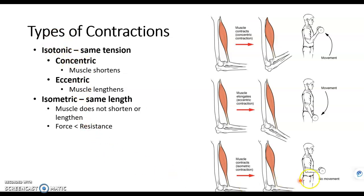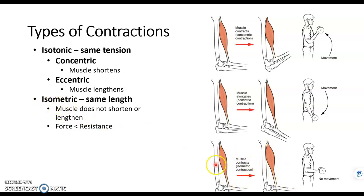But what if there's no movement? If you're just holding the weight like this, the muscle is still contracted, but we call that isometric — because the muscle, although it's contracted, stays the same length.